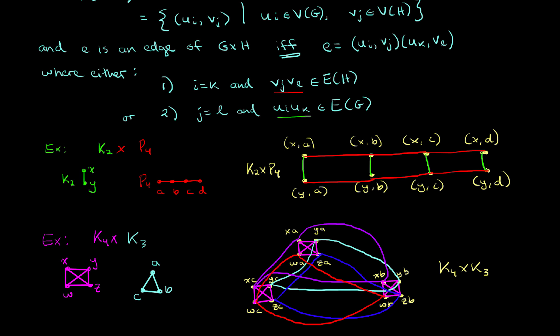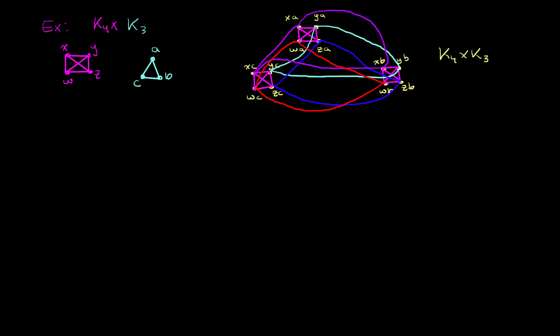Using the Cartesian product of graphs, we actually can define a very well-known type of graph. And it's called the hypercube, or n-cube, denoted Qn. And it's equal to the Cartesian product of K2, with K2, with K2, keep going, n times.